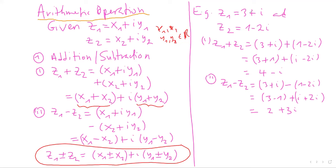For example, if z₁ = 3 + i and z₂ = 1 − 2i, then z₁ + z₂ = (3 + i) + (1 − 2i). Grouping like terms gives real parts 3 + 1 and imaginary parts i − 2i, resulting in 4 − i. For subtraction, z₁ − z₂ = (3 + i) − (1 − 2i) = (3 − 1) + (i + 2i) = 2 + 3i.